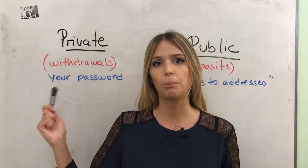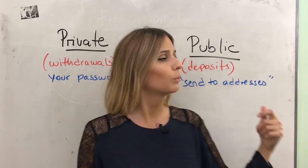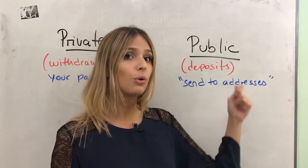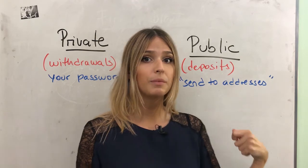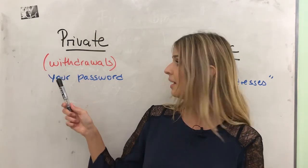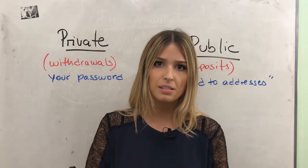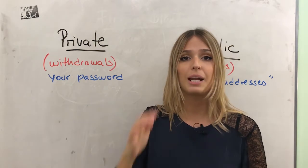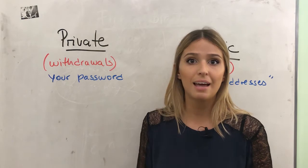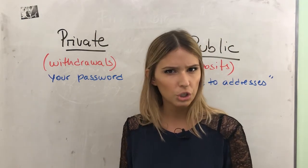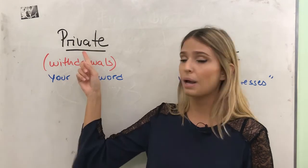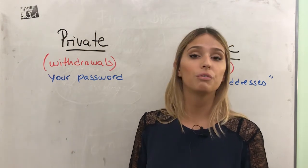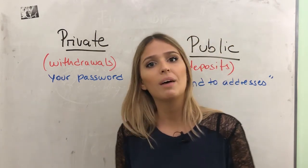Another way to think about private and public keys: public keys are for deposits — they are like addresses you give people so they can send you money. Private keys are for withdrawals — they are like your password that you need to access your funds. Their security is entirely your responsibility. If you lose your private key, you can forget about your funds. For this reason, Bitcoin is a system based on ownership: you own your money, you own your private key, and this gives you power over your money.